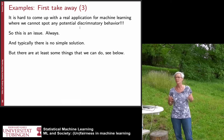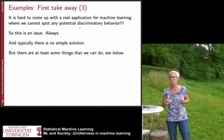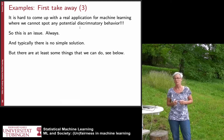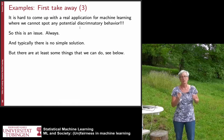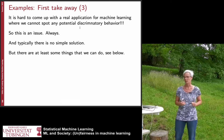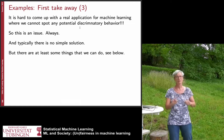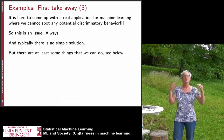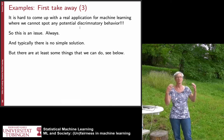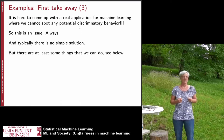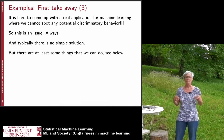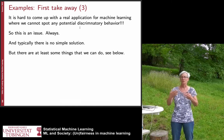It is hard to come up with any machine learning application where you cannot spot discriminatory behavior. No matter which application you consider, if you stare at it long enough, you will see discriminatory behavior — this always happens. Whenever you design a system used in a societal context, you must think about the fairness aspect. There is no simple technical solution, and the solution requires joint discussion between society and machine learning practitioners about which solution everyone prefers.